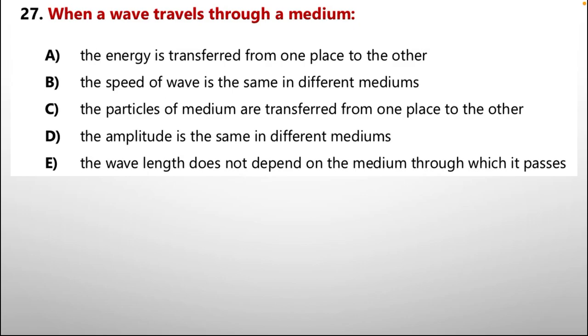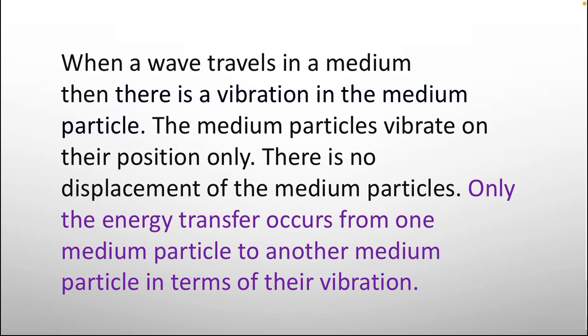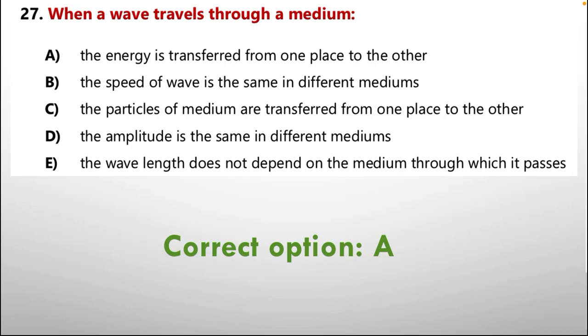For this question, first of all, we should know what is actually a wave. When a wave travels in a medium, then there is a vibration in the medium particle. The medium particles vibrate on their position only. There is no displacement of the medium particles. Only the energy transfer occurs from one medium particle to another medium particle in terms of their vibration. Regarding this explanation, the correct option is option number A. The energy is transferred from one place to the other.